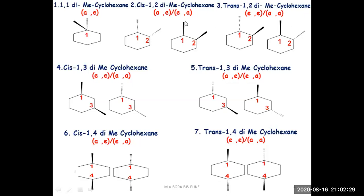What is cis and what is trans? Cis means both groups are going in the same direction — either both are alpha or both are beta. A dotted line indicates alpha, and a solid wedge line indicates beta. If both substituents are alpha, or both are beta, the two groups are on the same side of the cyclohexane plane, and therefore it is called cis-1,2-dimethylcyclohexane.